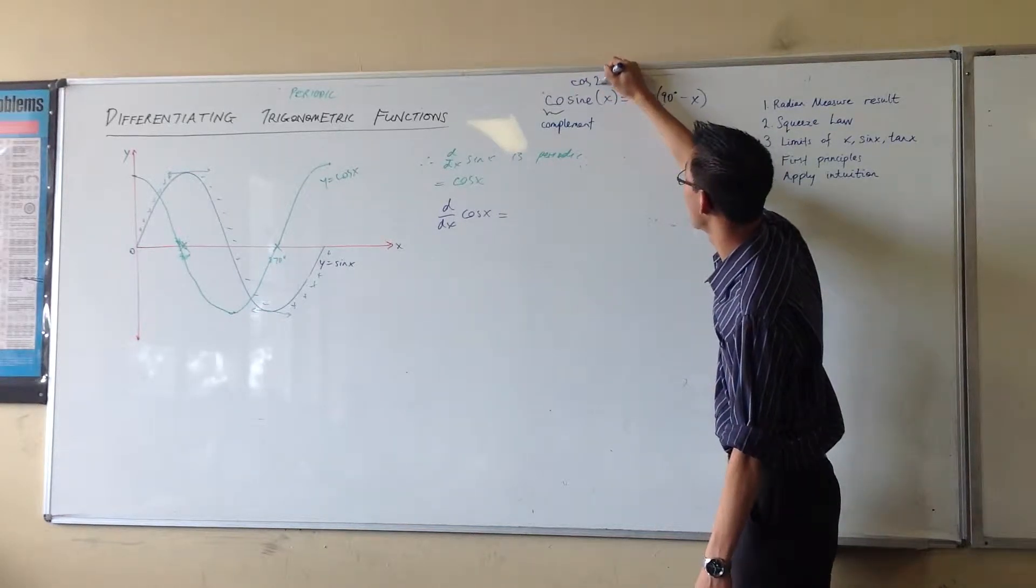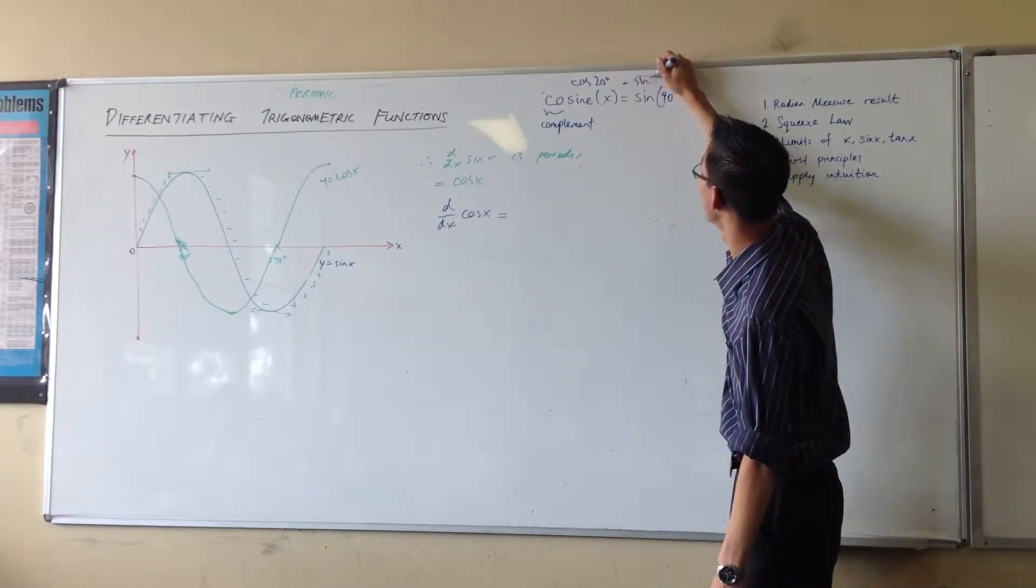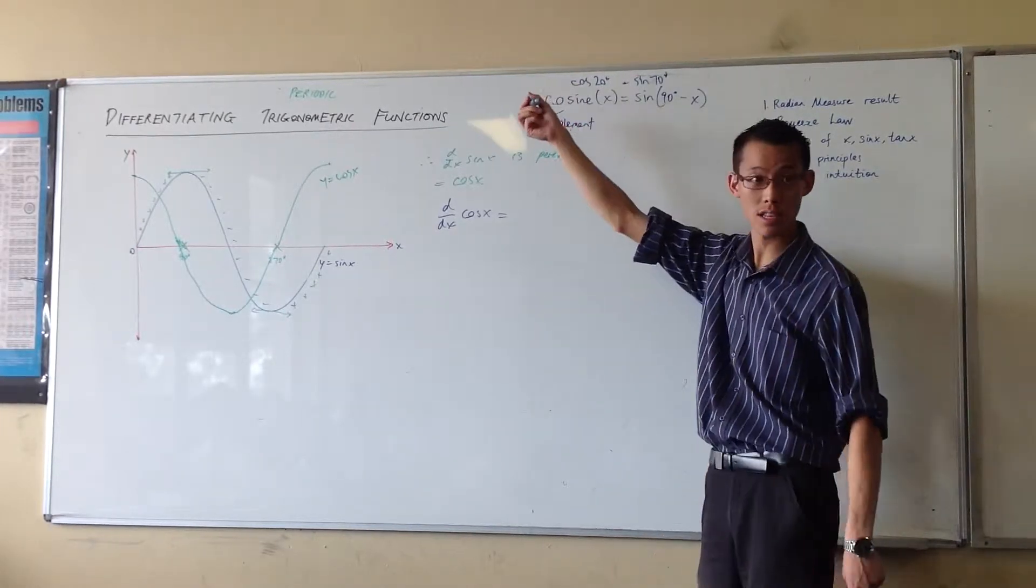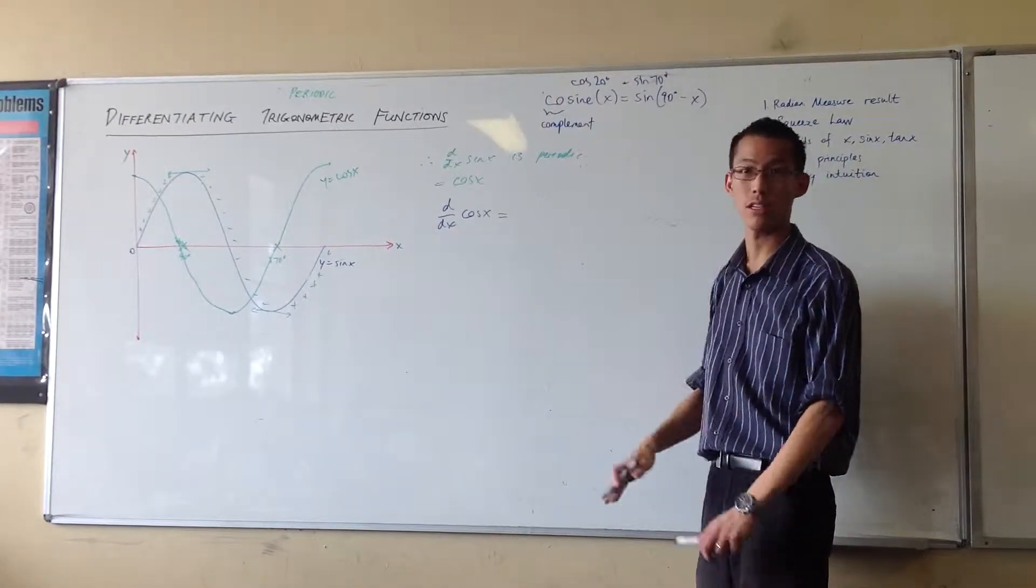Cos of 20 is equal to sine of 70. Or a more common example, sine of 30 is cos of 60. If they add up to 90 degrees, you're happy.